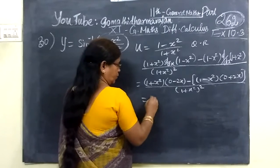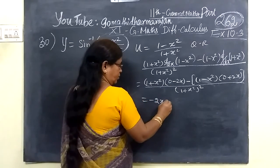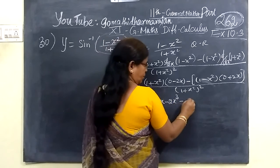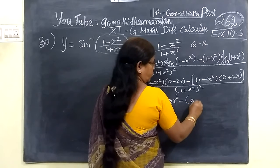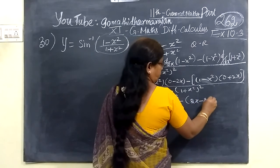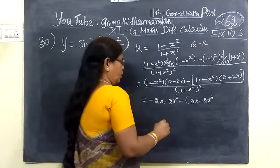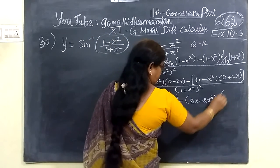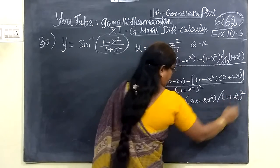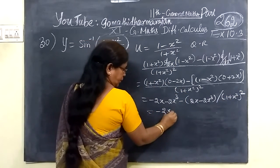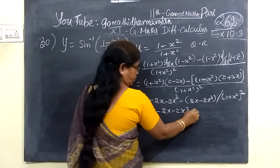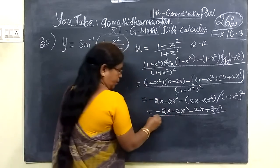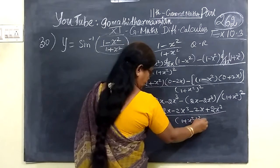The denominator is 1 plus x squared. Then: minus 2x minus 2x cubed, then minus 2x cubed, divided by 1 plus x squared, the whole squared.